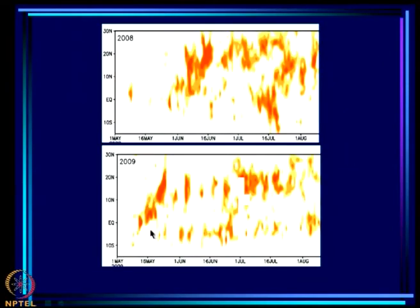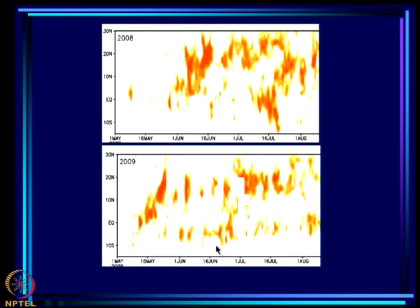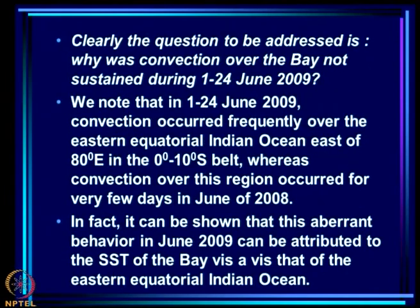In 2009 we can see this seesaw: the bay convection dies, then equatorial convection flares up; after that dies, bay convection flares again, and so on. This suggests a competition between convection over the bay between 10 and 20°N and convection over the equator to 10°S over the same longitudes.